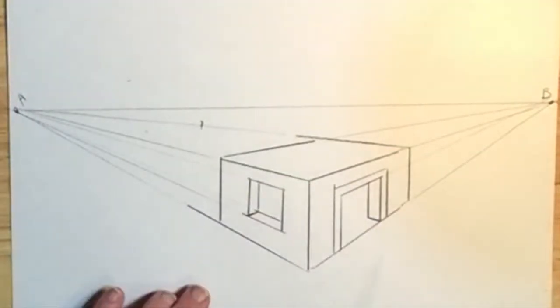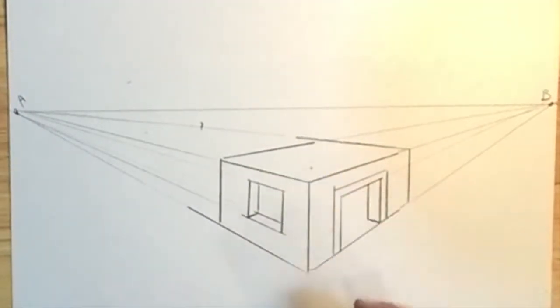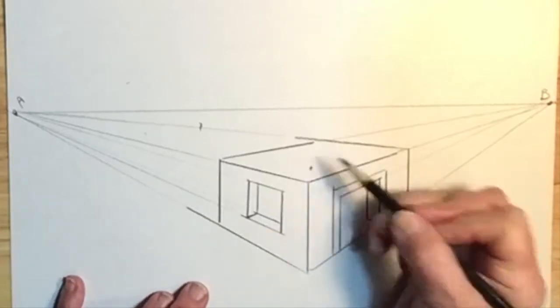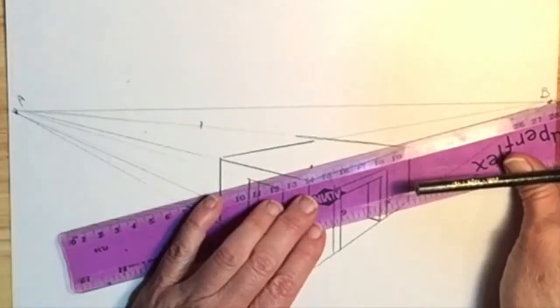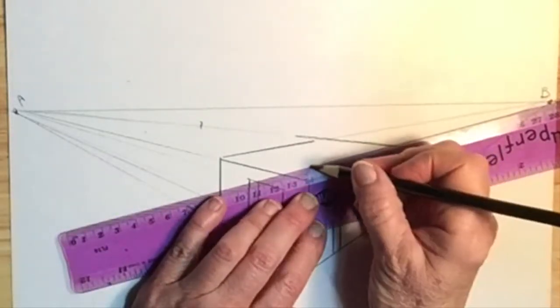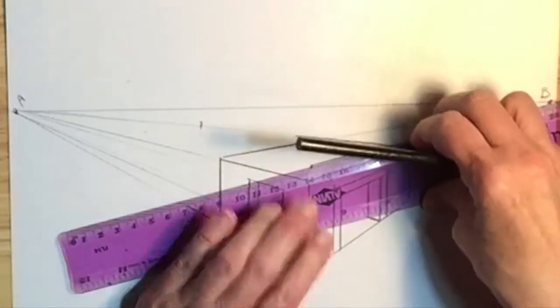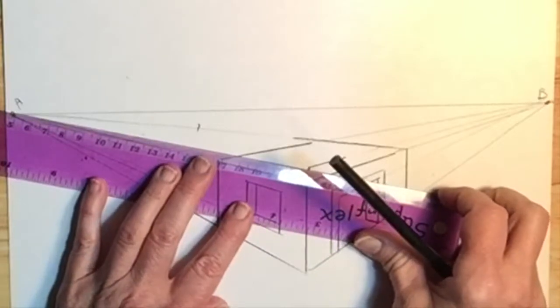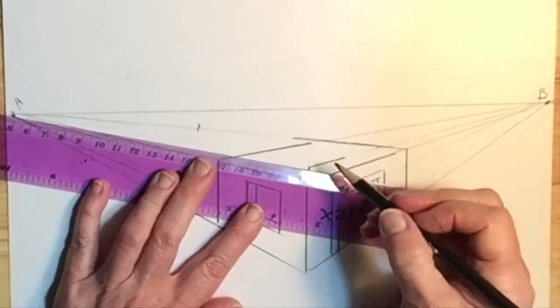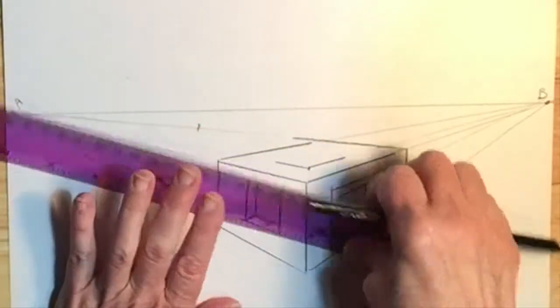Okay, now to add a skylight. I first draw a dot to establish where I want the corner of it to be. Then I draw a line from that dot to B. And I draw another line from that dot to A, but I only make it as long and wide as I want the skylight to be.